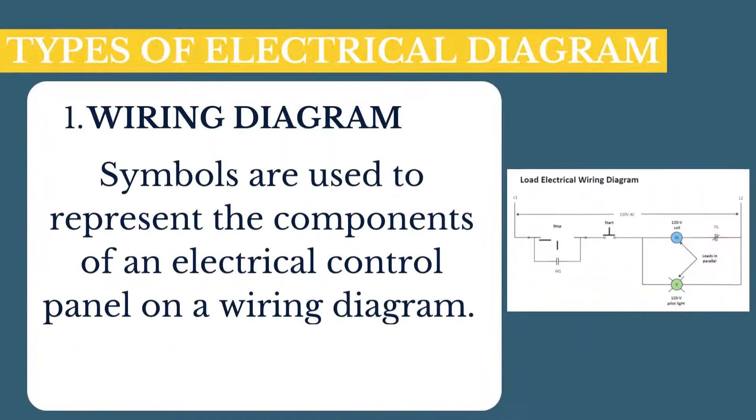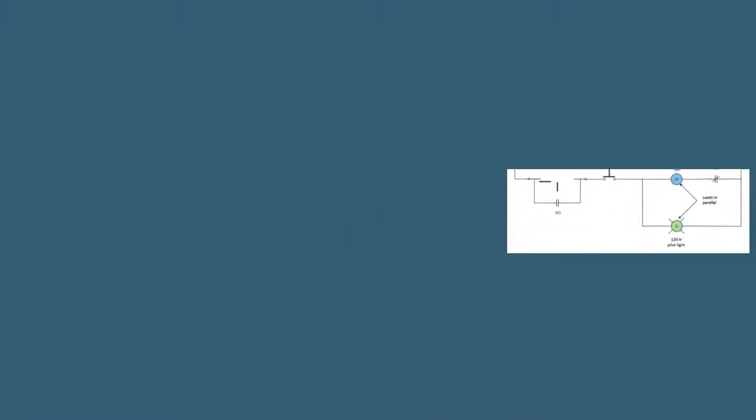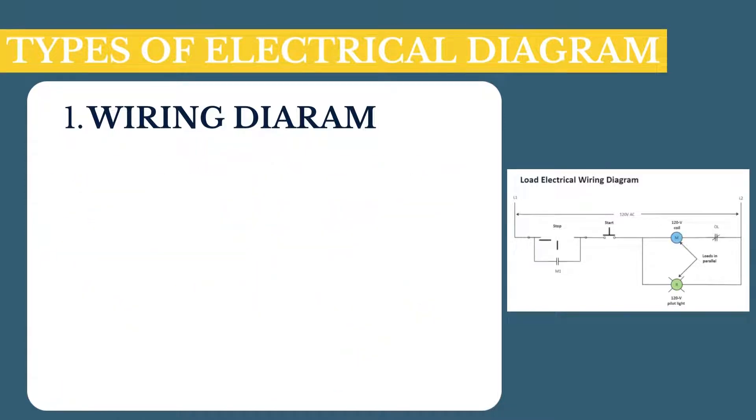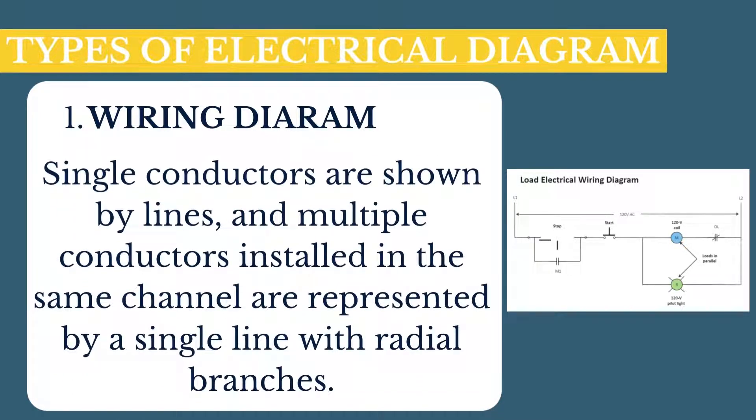Wiring diagram symbols are used to represent the components of an electrical control panel. The lines represent the wires and are labeled with numbers or letter-number combinations to show the connections between components. Single conductors are shown by lines, and multiple conductors installed in the same channel are represented by a single line with radial branches.